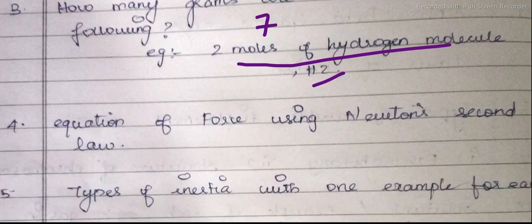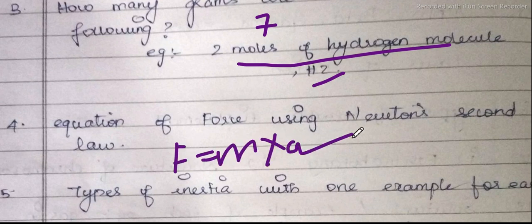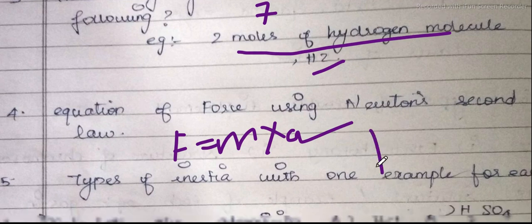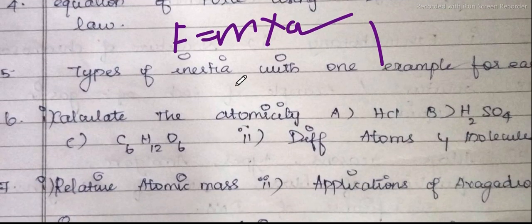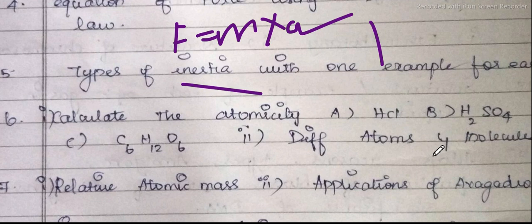The fourth question is the equation of force using Newton's second law — from the first lesson. F is equal to M into A, and we have a derivation to learn. Also from the first lesson: types of inertia — what is inertia, inertia of motion, inertia of direction, inertia of rest. We have questions with one example, such as a car turning left and right side.